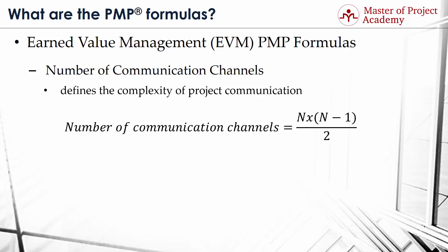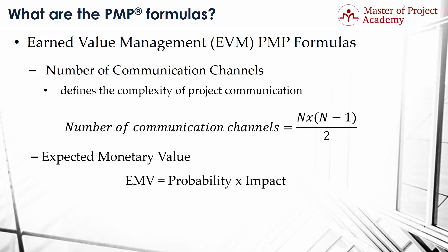PMP formula number 14: Expected Monetary Value or EMV. We usually use it in risk quantitative analysis to measure EMV of an opportunity or threat. We calculate it by the following formula: EMV equals probability multiplied by impact.